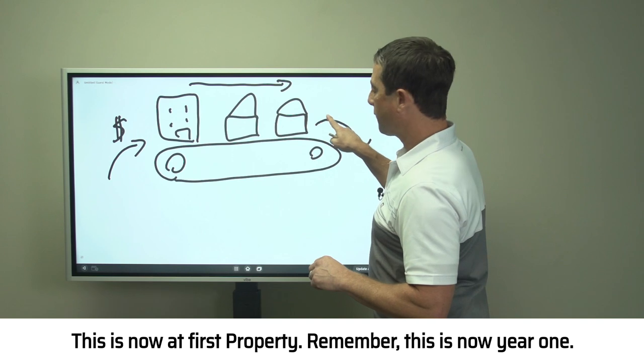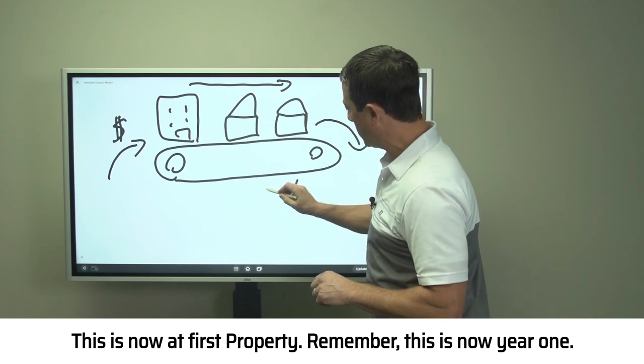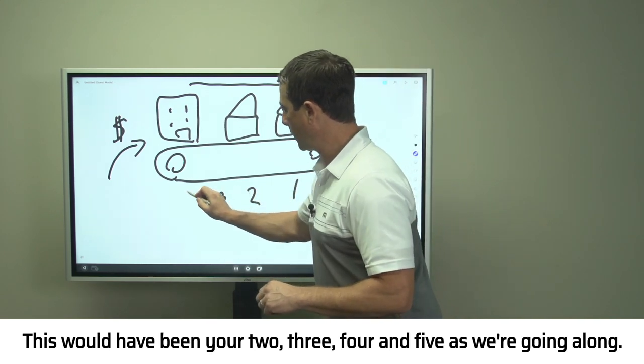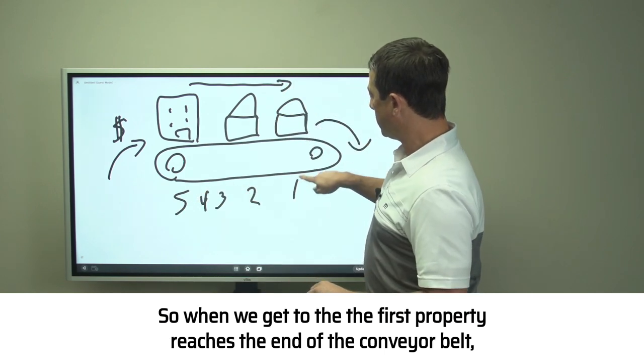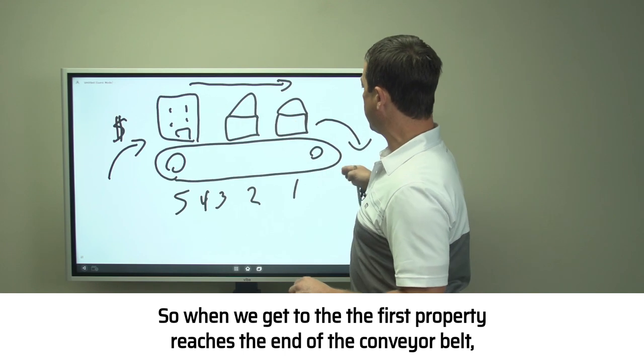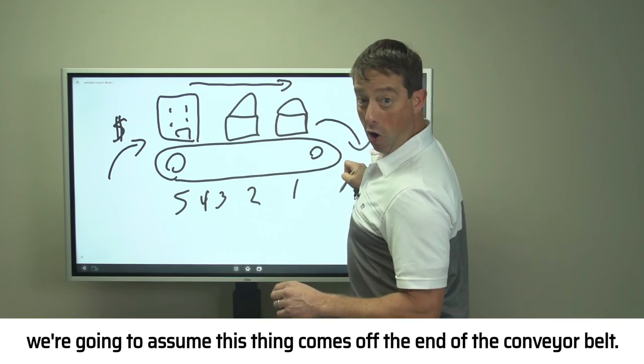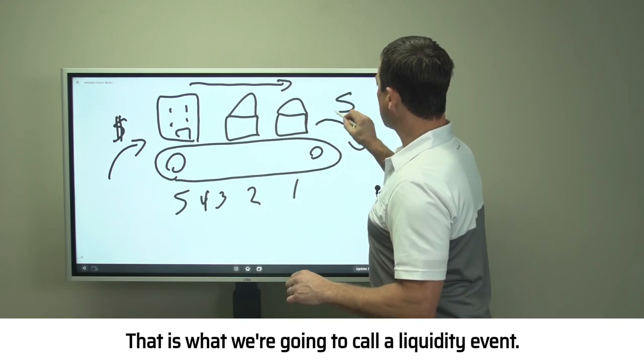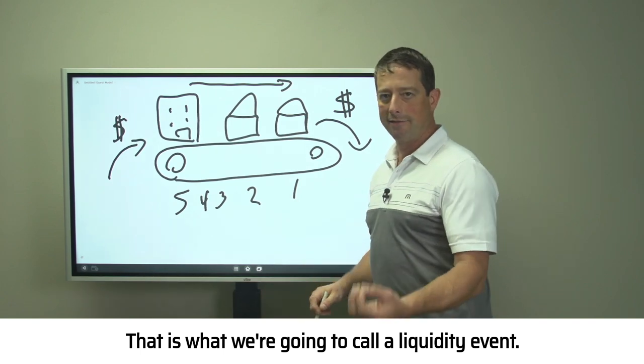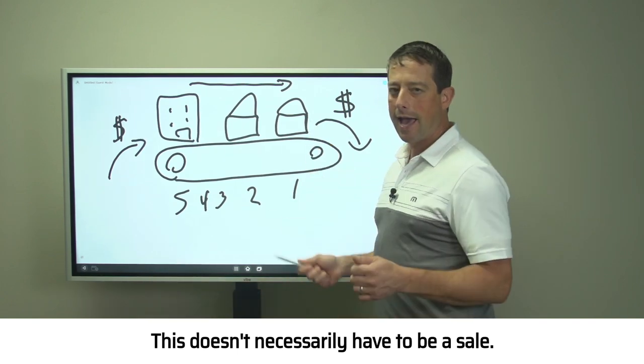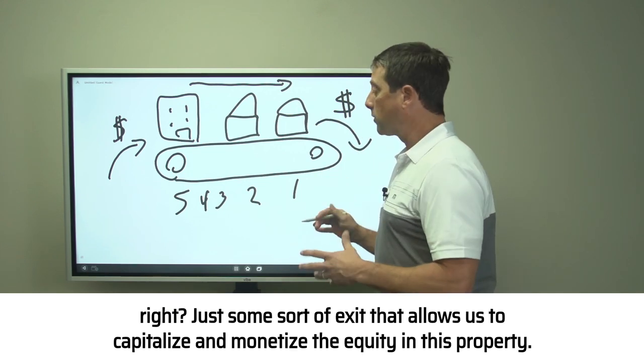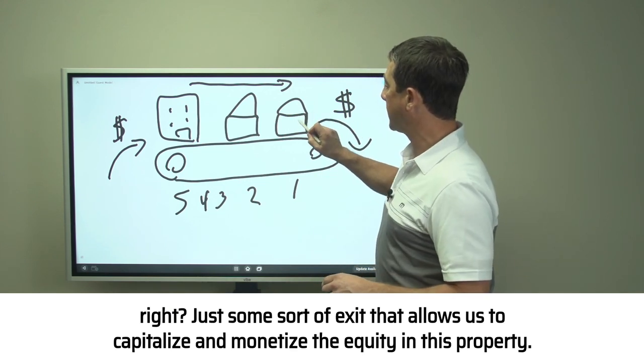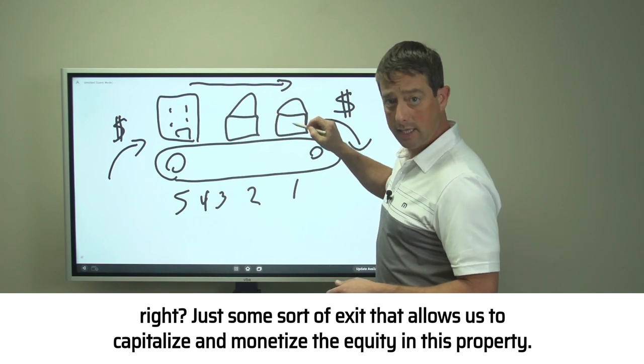In the end, we come to a liquidity event. This is now that first property—remember this is now year one, year two, three, four, and five as we're going along. When the first property reaches the end of the conveyor belt, it comes off the end. That is what we're going to call a liquidity event. This doesn't necessarily have to be a sale—it could be a refinance, just some sort of exit that allows us to capitalize and monetize the equity in this property.